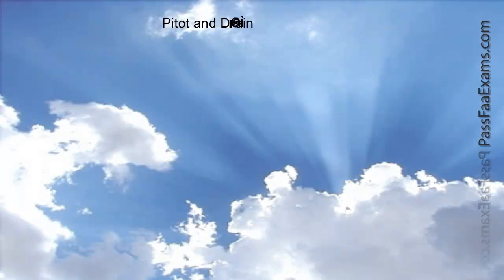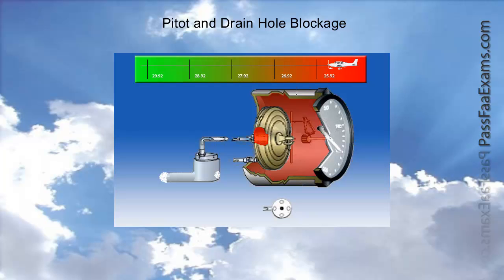Now, in the case of a complete blockage of the pitot tube and static port, it is pretty obvious, at least if we know how an altimeter works, to figure out what will happen. In essence, we have actually transformed the diaphragm into an aneroid wafer and therefore transformed the airspeed indicator into an altimeter. The air and pressure inside the diaphragm is now trapped, while the pressure inside the chamber changes based on the outside pressure.